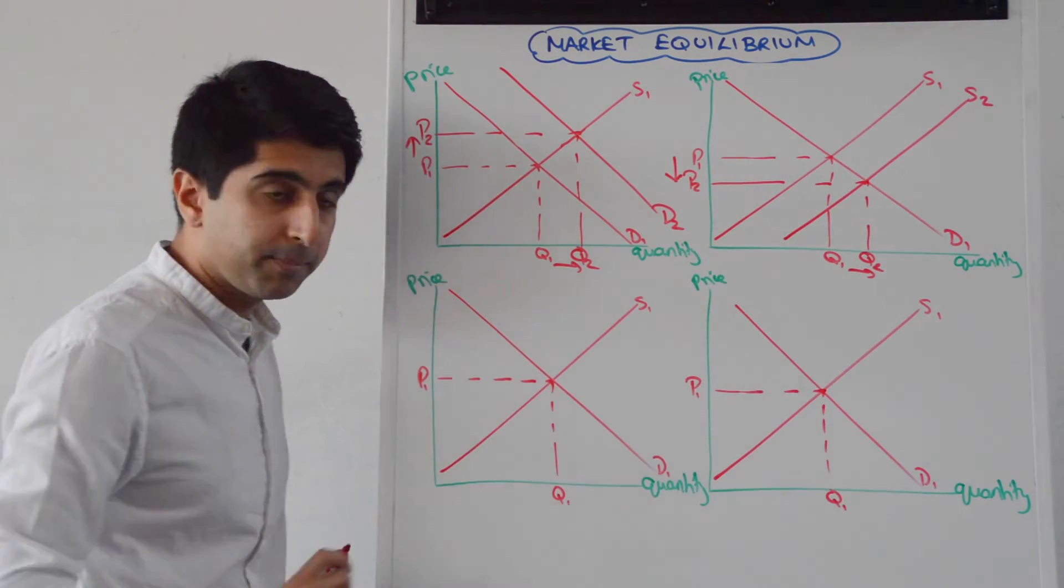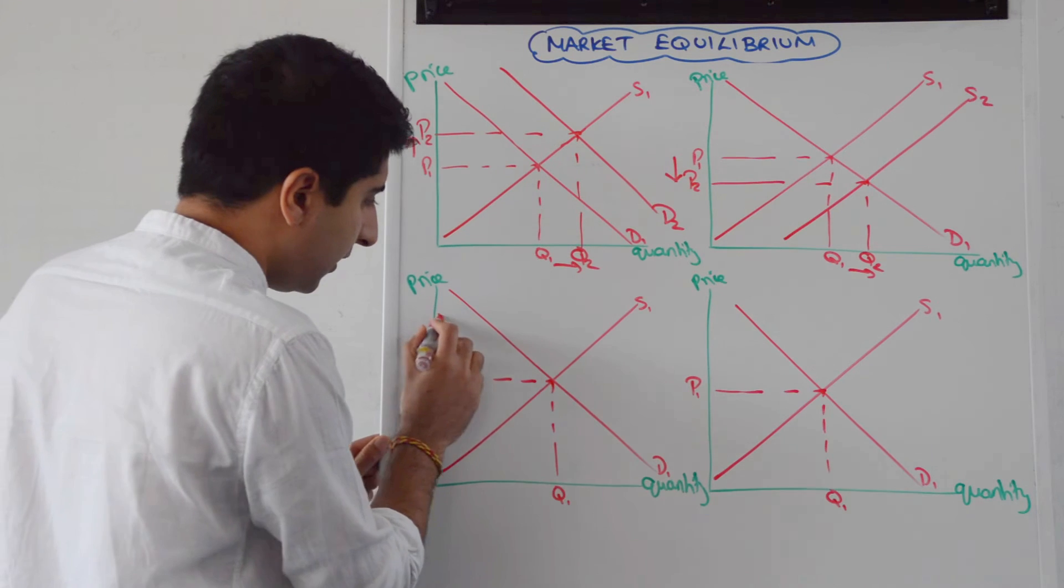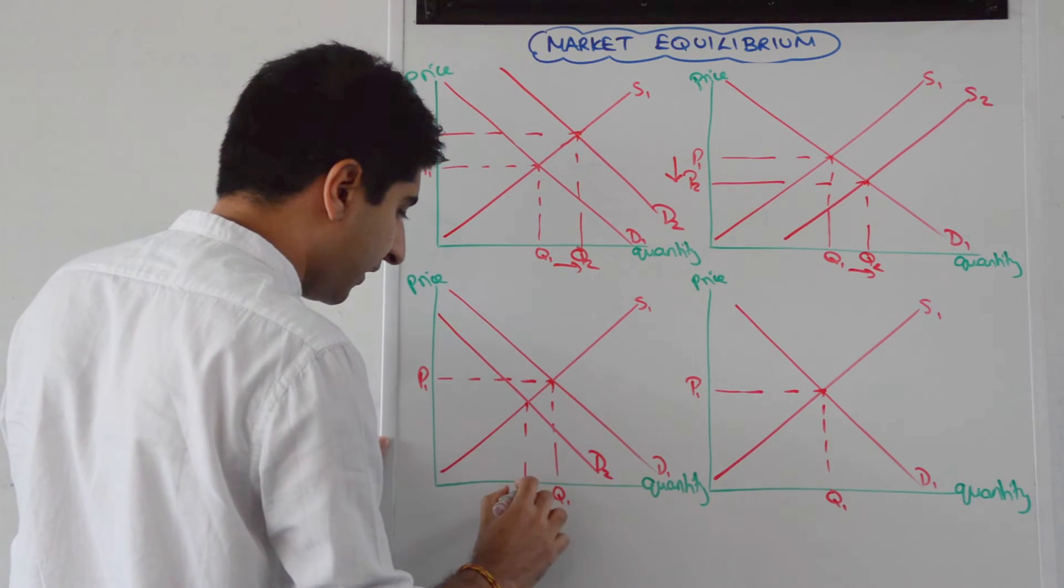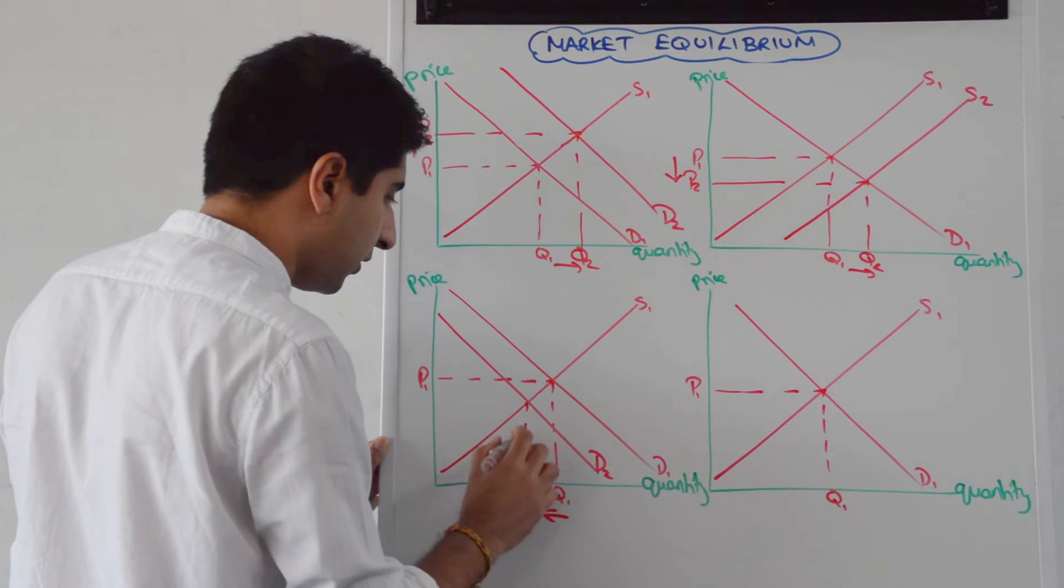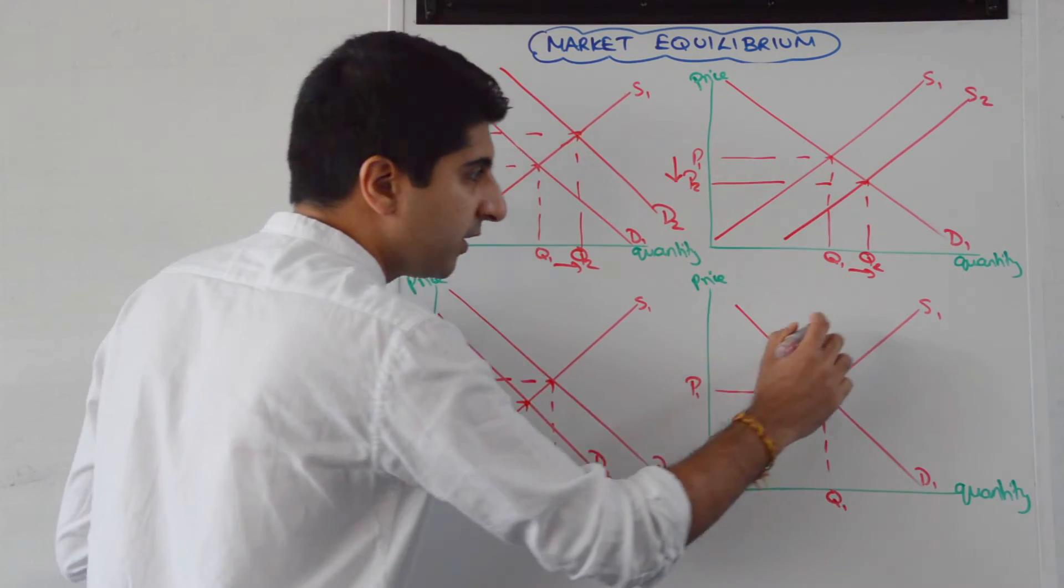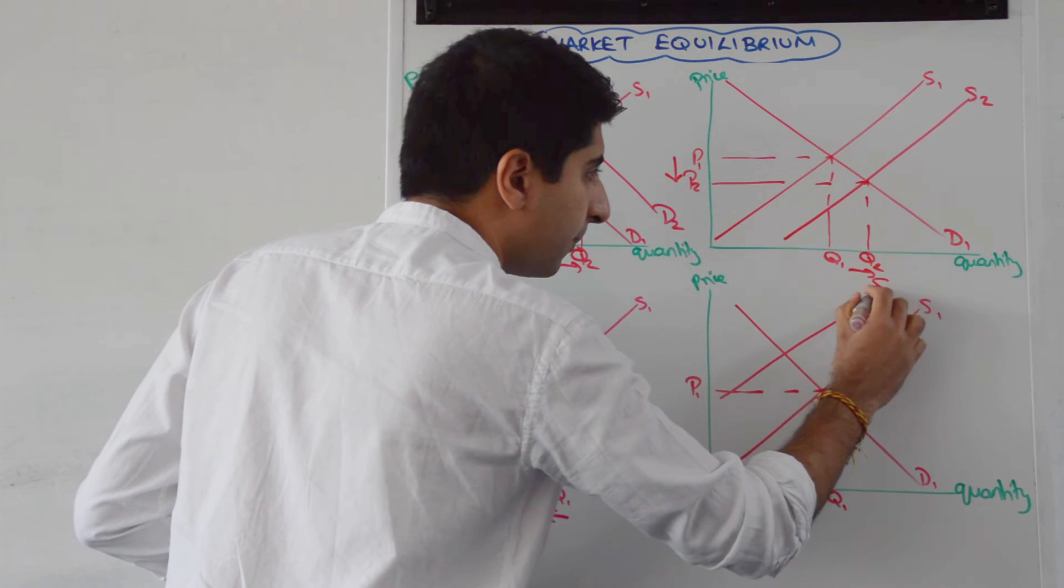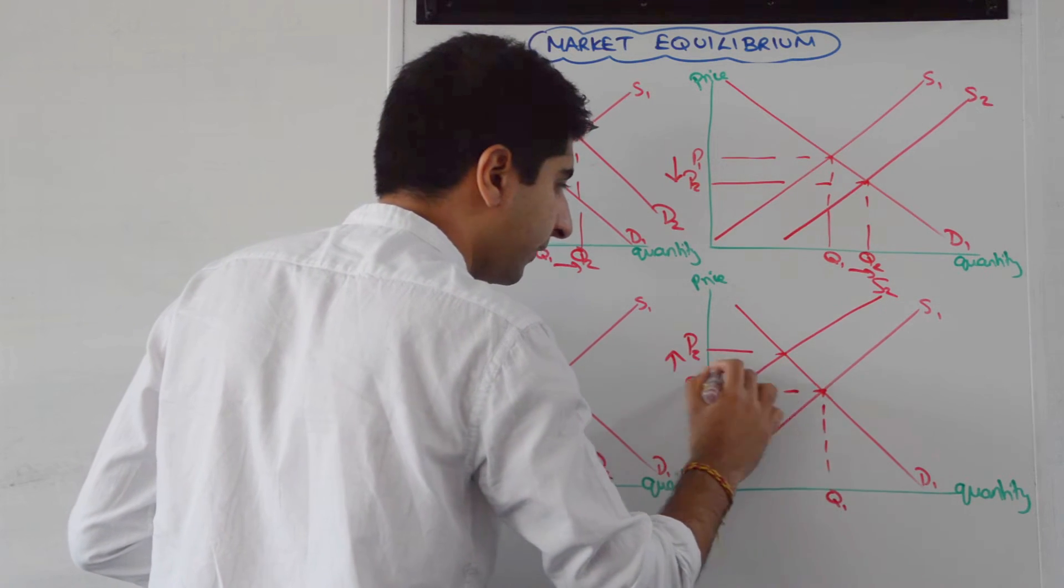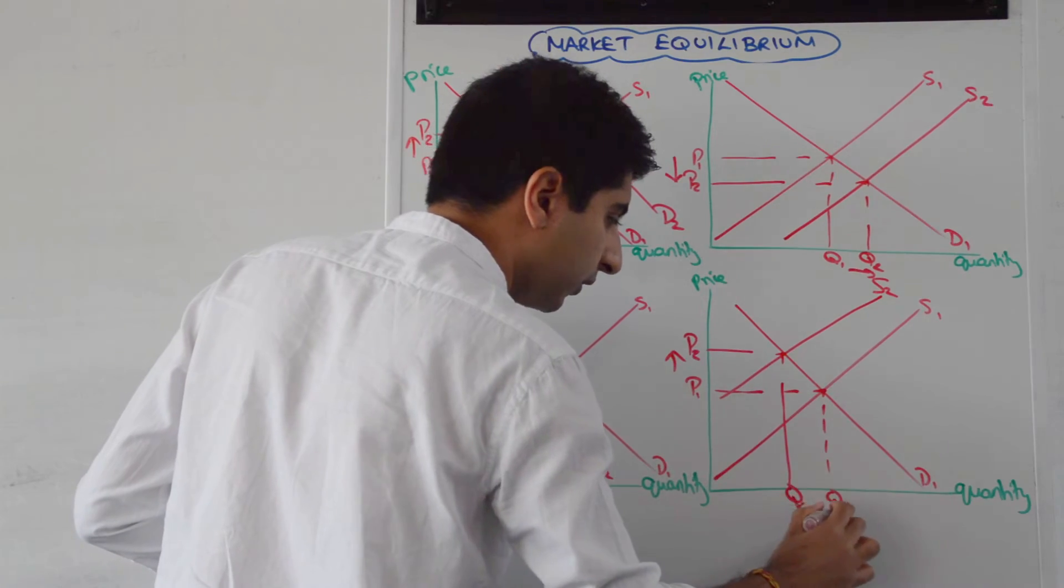Now we'll go demand left and supply left. So if we go demand left, we'll simply shift it from D1 to D2 to the left. Now we're going to see a reduction in quantity and also a reduction in price and supply shifting left. There it is from S1 to S2 and we can show an increase in price and a decrease in quantity.